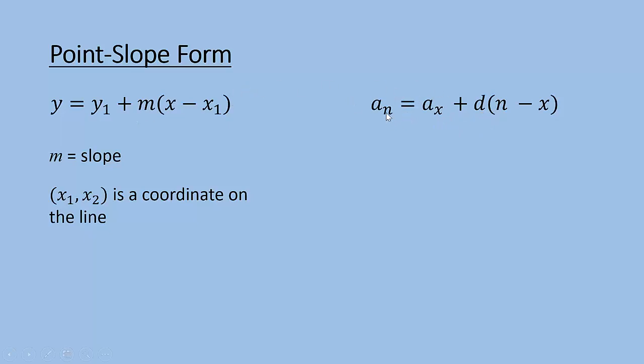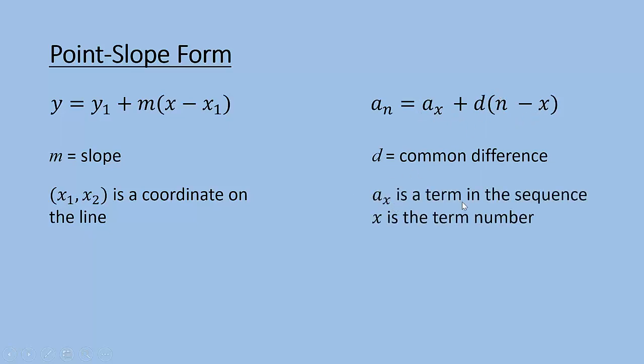We use the subscripts typically when we're talking about terms. You'll notice that on these here. Instead of m for slope we're going to call the slope, which is really the difference, we'll call that d, a common difference. And then where we got a point plugged into our formula, which is this x1 y1 here, that's the x and the a sub x. That's still a connected pair where a sub x is a term that you know and x is the term number.